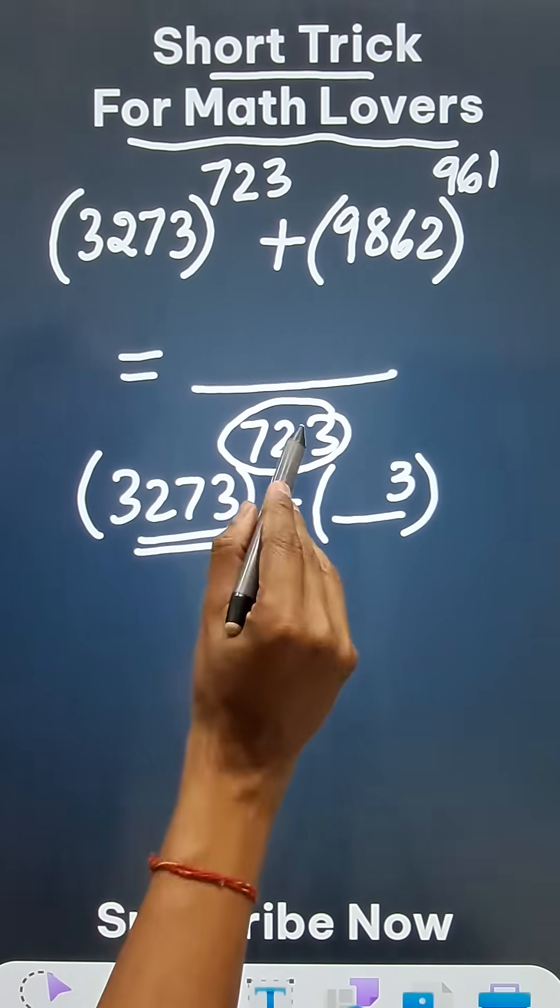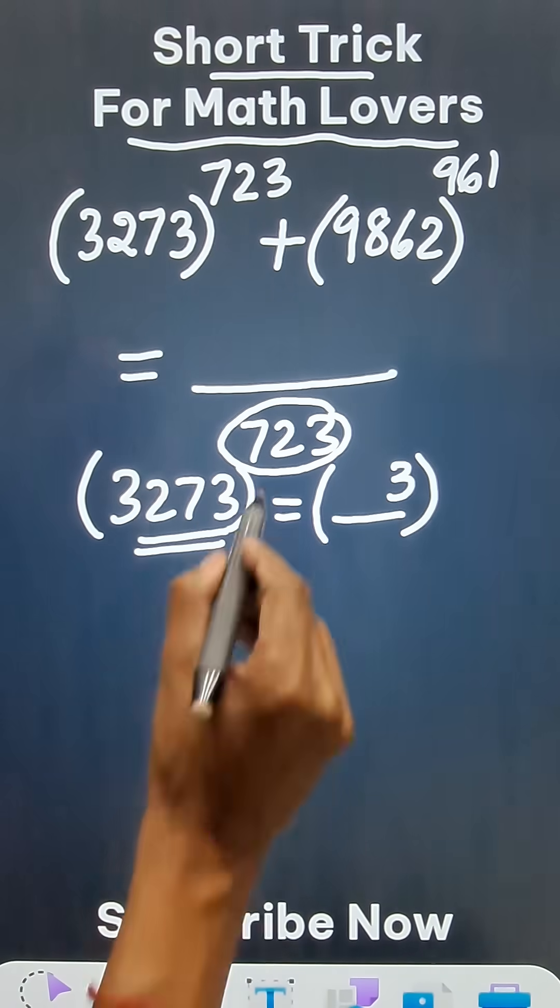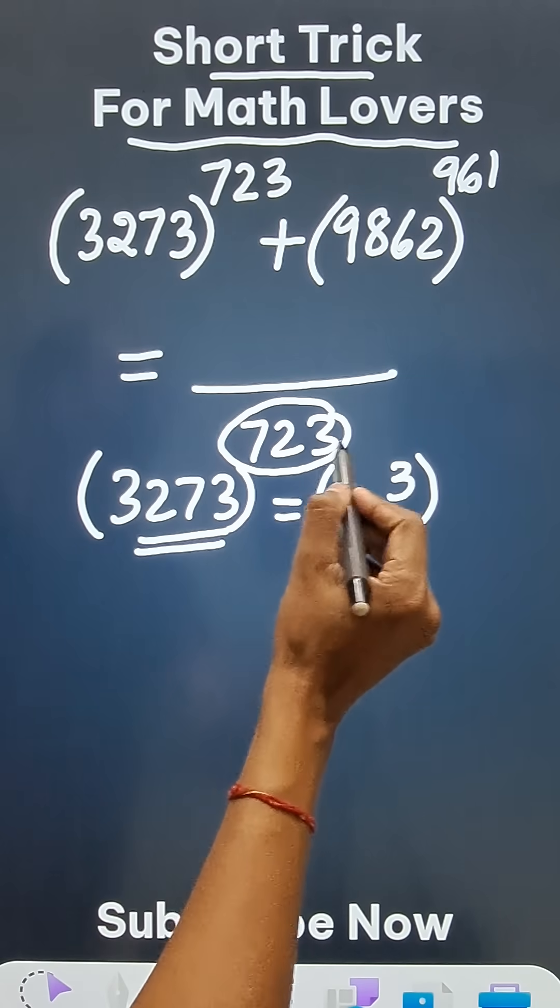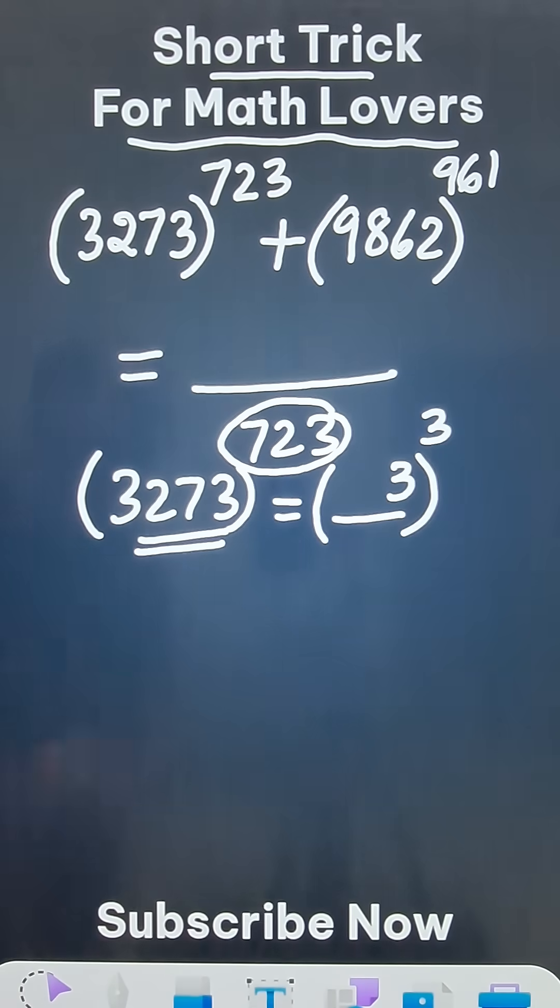723 when divided by 4—remember that 4 is a default number—so when you divide 723 by 4, since 720 is divisible by 4, you will get a remainder of 3. So I just need the remainder.